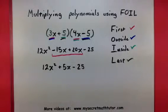So in the end, when I've multiplied these two binomials together, my final answer is 12x squared plus 5x minus 25. If you'd like to see more videos, please visit MySecretMathTutor.com. Thanks for watching.